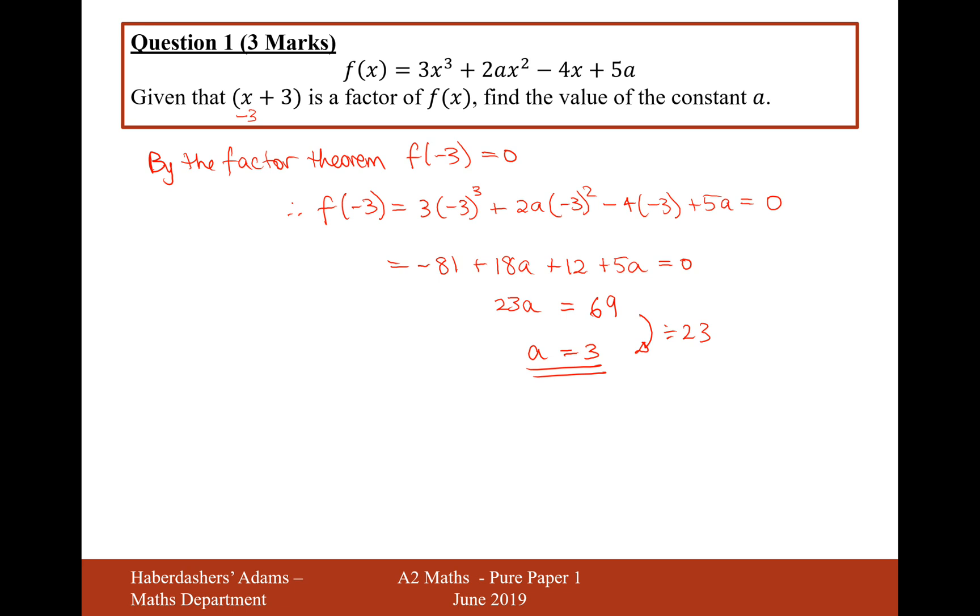So there we are, that's the answer for this question, three marks for that one. Clearly stating by the factor theorem f(-3) equals 0, that's a really key mark there, and then showing that you're substituting it in, and then working out what a is, which is 3. That's the answer for question one.